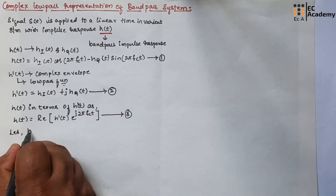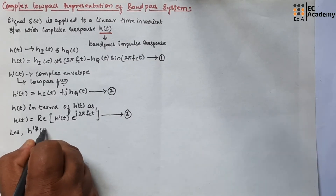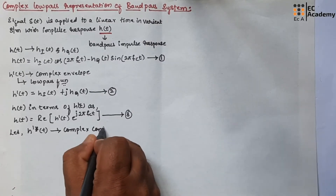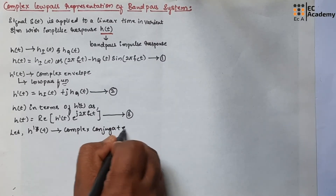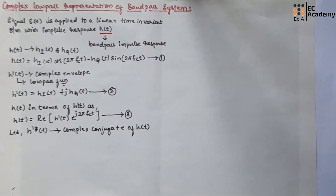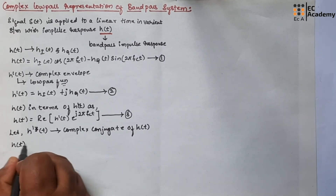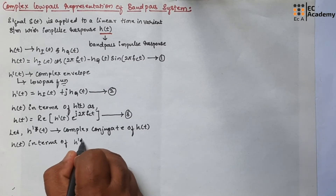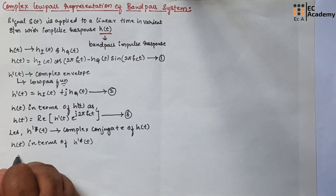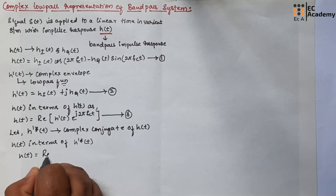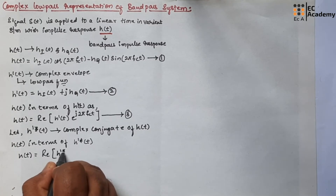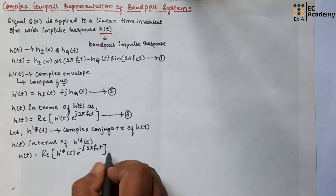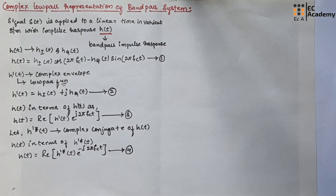Let us take H dash star of t, which is the complex conjugate. We can also represent H of t as: H(t) = Re{ H̃*(t) · e^(−j2π fc t) }. Let us call this equation number 4.